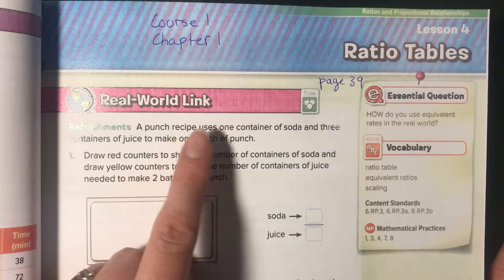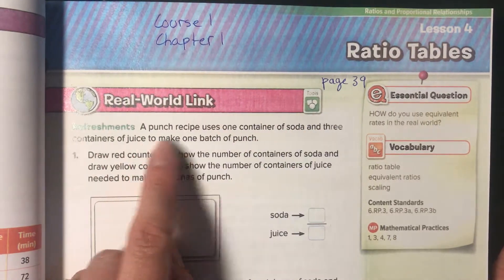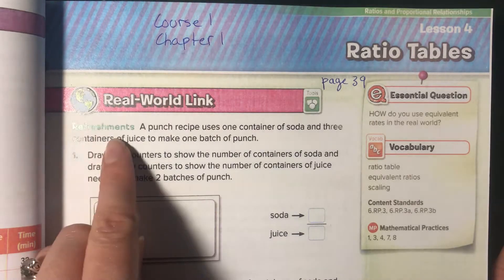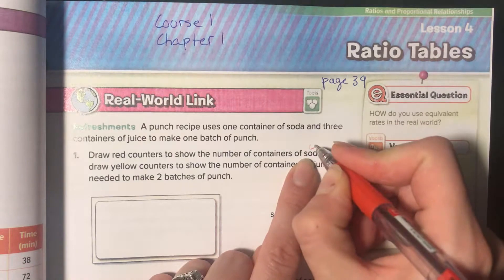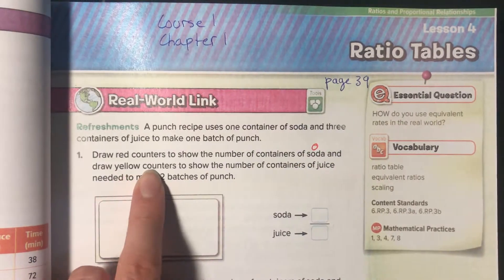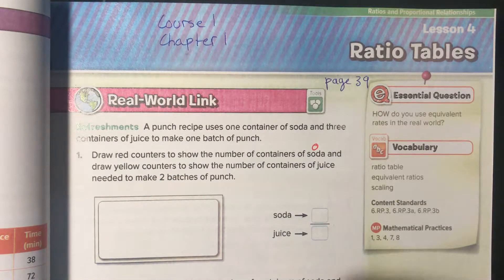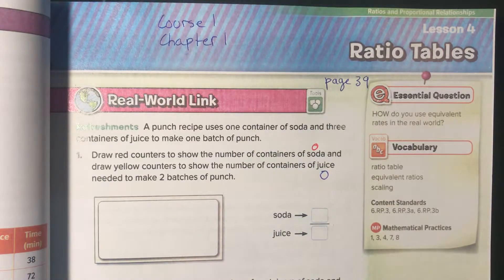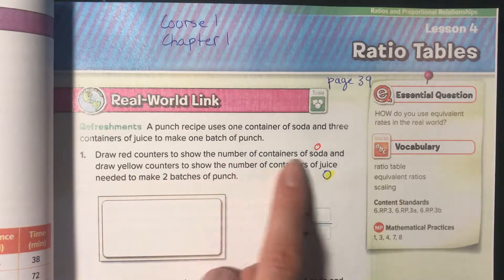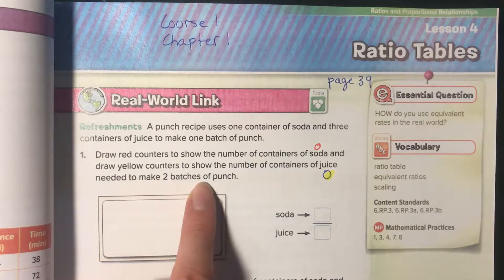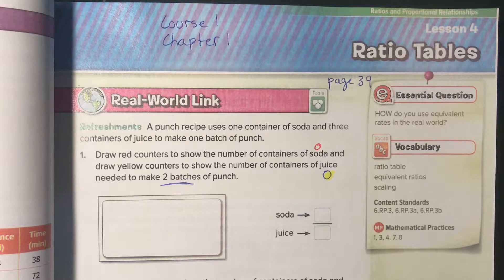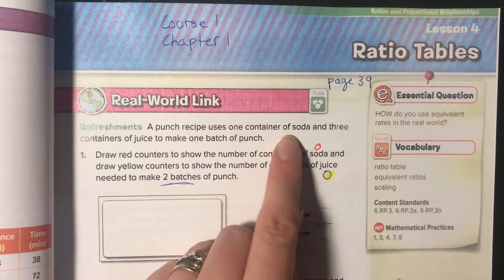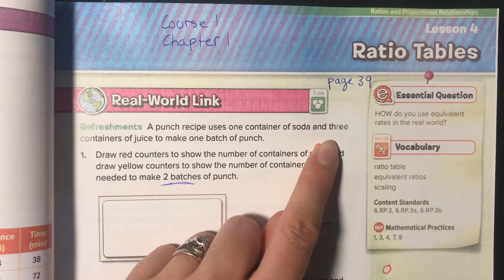Let's get started. A punch recipe uses one container of soda and three containers of juice to make one batch of punch. Draw red counters to show the number of containers of soda. So red for soda, I'll put a little red over here so I remember. And draw yellow counters to show the number of containers of juice. I'll just use my highlighter.